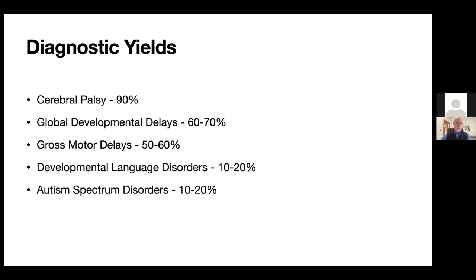Regarding diagnostic yields — and these numbers are a bit old and likely better now — they can vary. If a child has CP, our testing is quite good and we can find an etiology more than 90% of the time. For children with global delays, about two-thirds of the time we can find an etiology. Children with motor delays it's about half. The yield goes down quite a bit for children with autism spectrum disorders or isolated language disorders.